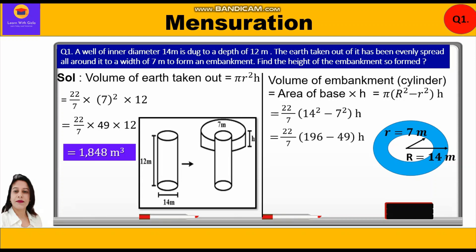Substituting the values: 22/7 × (14² − 7²) × h = 22/7 × (196 − 49) × h = 22/7 × 147 × h = 462h m³.